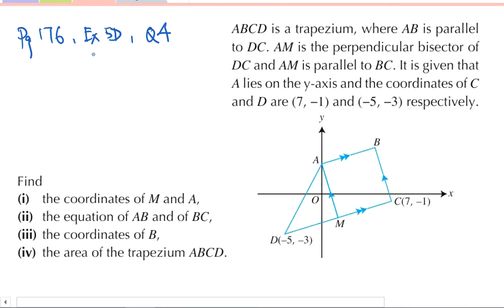I'm going to go through some of the keywords or key terms that are necessary first. AB is parallel to DC, indicated by the two arrows there. AM is the perpendicular bisector of DC. This means M is the midpoint because it bisects into two equal parts, and not only that, it is perpendicular, so it must be 90 degrees over there.